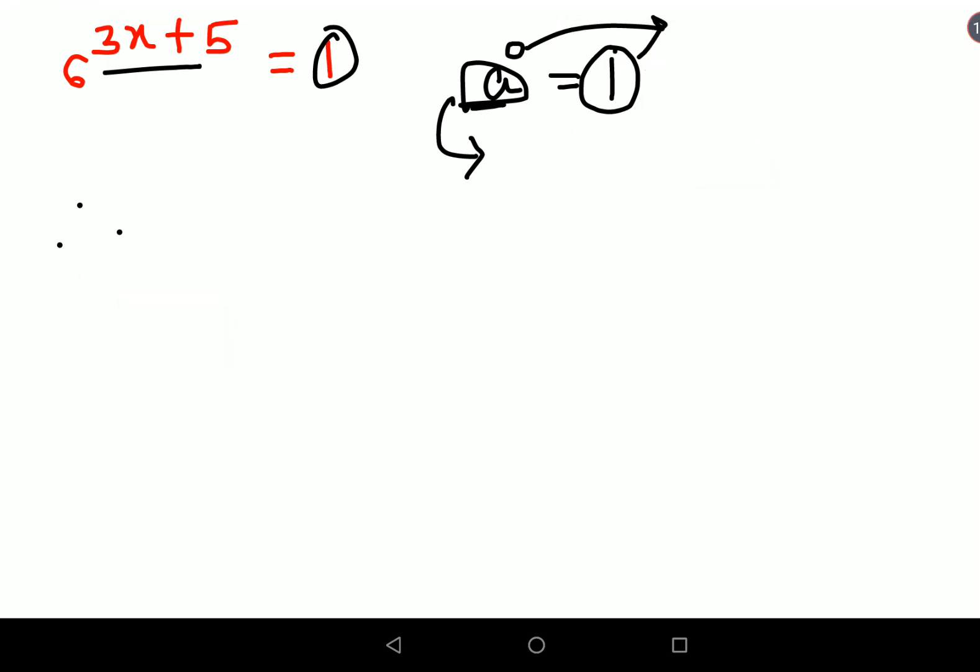Therefore, I can say that 6 raised to 3x plus 5 equals 6 raised to 0. Therefore, since the bases are the same, I can equate the indices: 3x plus 5 equals 0.